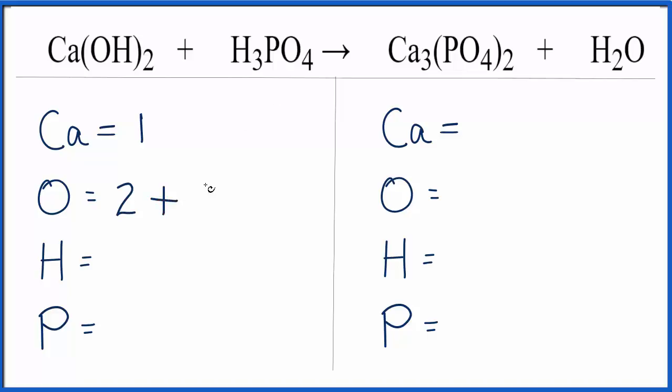Plus we have the four oxygens here, so we have six total oxygens. Two times the one, we have two hydrogens, plus we have these three here. That gives us five. And then we have the one phosphorus atom.